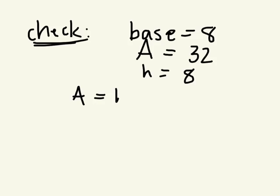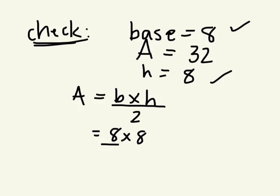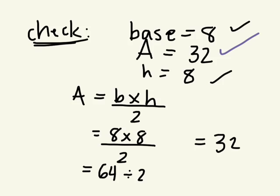So area equals base times height divided by 2. Base we said was 8. Height we said was 8 divided by 2. What's 8 times 8? 64. And what's 64 divided by 2? 32. And that is the answer that we should have been given.